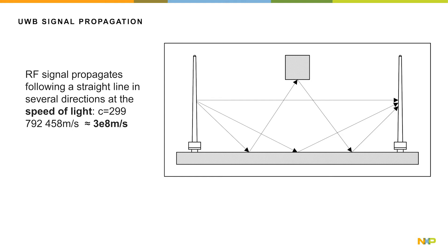The RF signal propagates following a straight line in several directions, traveling at the speed of light. The signal while traveling is affected by absorption, reflection, refraction and diffraction.